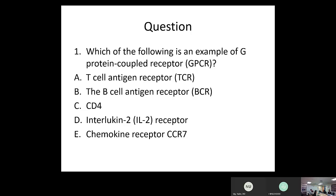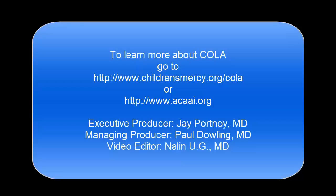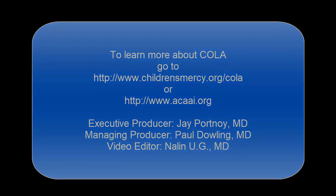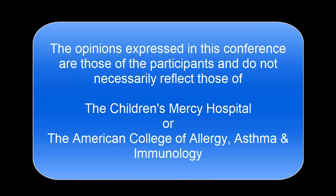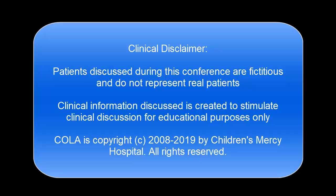Quiz answers: Which of the following is an example of GPCR? Answer: E — chemokine receptor CCR7. In the T-cell calcium signaling pathway induced by antigen recognition, which enzyme and transcription factor are activated? Answer: Calcineurin and NFAT. Calcium activates the calcium-calmodulin complex, which activates calcineurin phosphatase, which dephosphorylates NFAT to its active form.